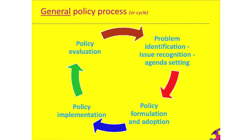Policy implementation can involve spending money, hiring new people, creating new institutions and new ways of working, and delivering new services at local level. Lastly, there is the policy evaluation step — evaluating how the policy was implemented and whether it achieved its goals, feeding back into the process. If the problem hasn't been resolved, the policy may need to be changed and we go around the cycle again.